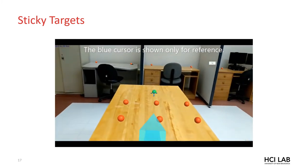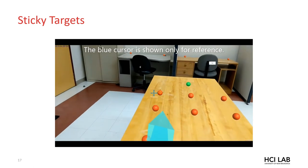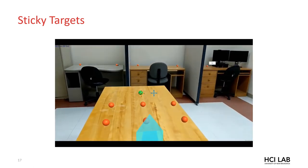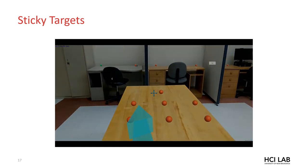Sticky targets changes the control to display ratio when a cursor is over top of a target, requiring more movement in motor space but resulting in less movement in display space. This creates an effect where the cursor sticks to the target. Again, we show an additional cursor to demonstrate. The blue cursor is the baseline cursor and the orange cursor is the sticky target cursor.